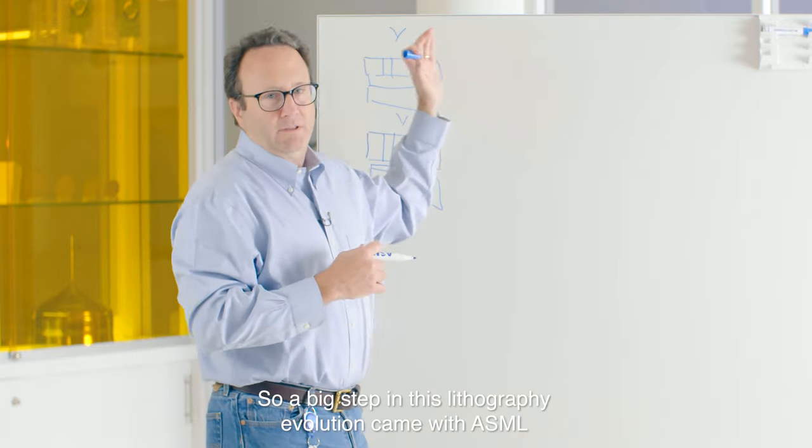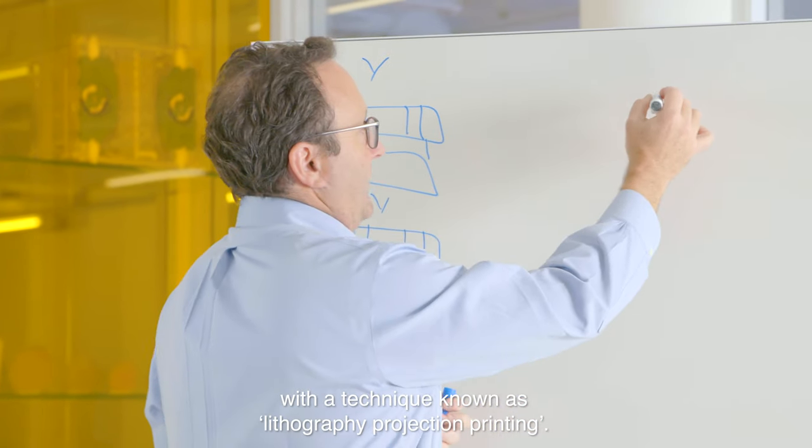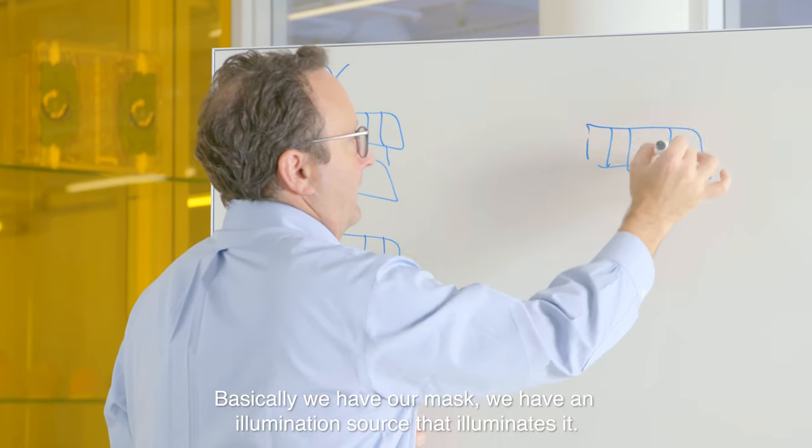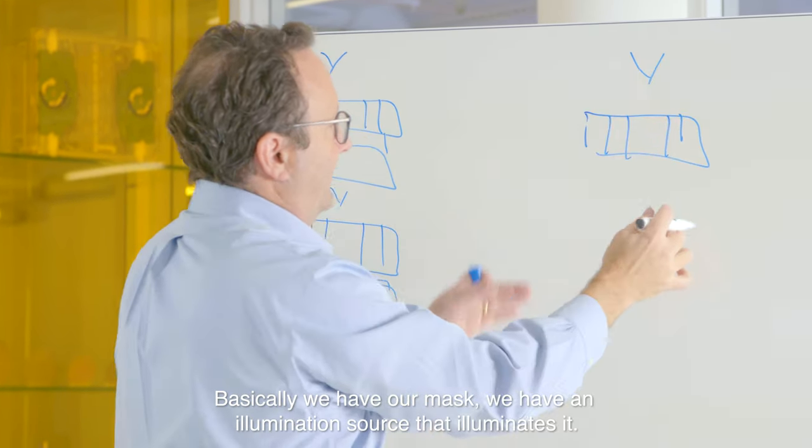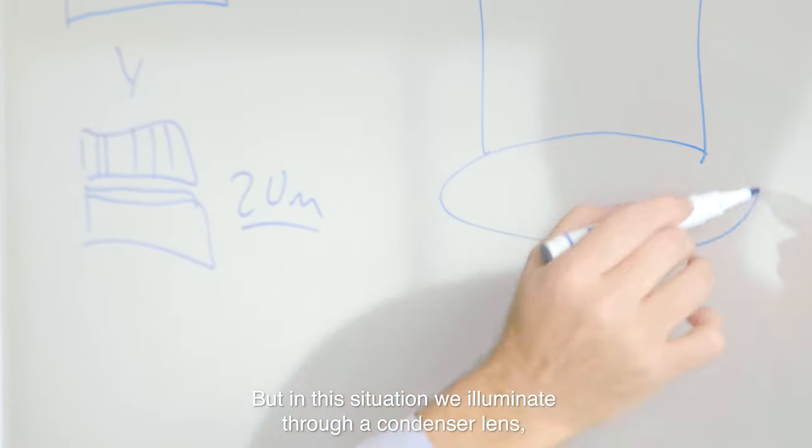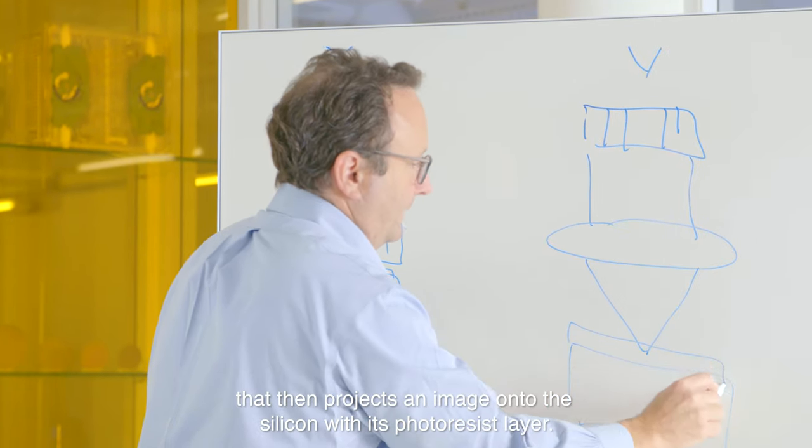So a big step in this lithography evolution came with ASML with a technique known as lithography projection printing. Basically we have our mask. We have an illumination source that illuminates it, but in this situation we illuminate through a condenser lens that then projects an image onto the silicon with its photoresist layer.